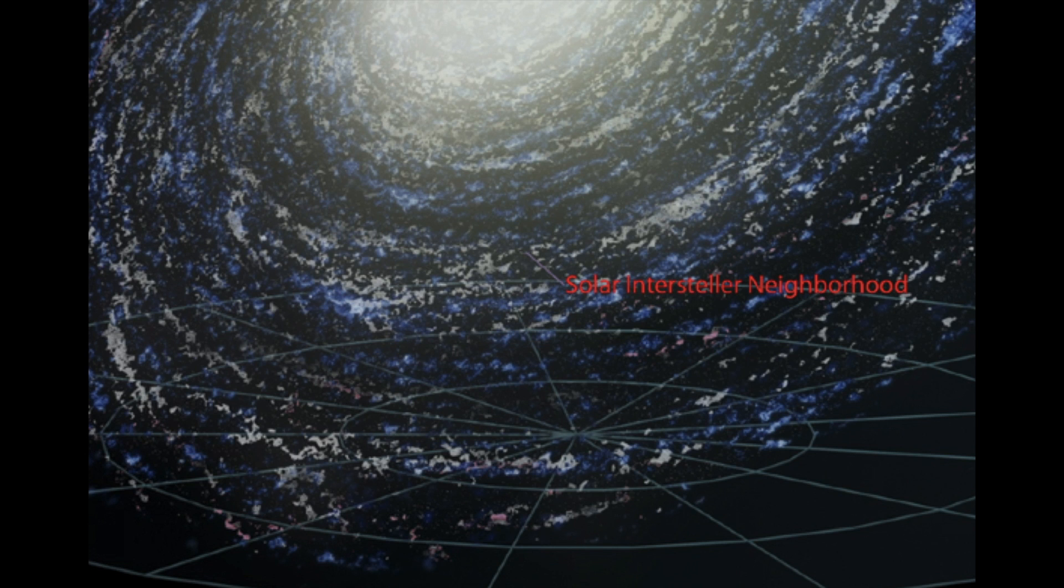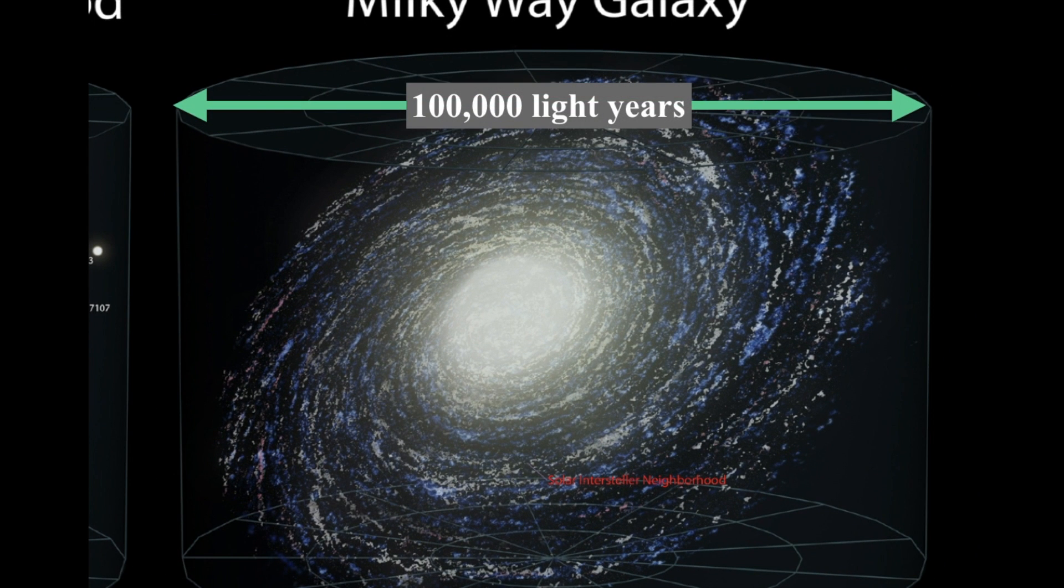Our local solar neighborhood is one of many such neighborhoods in the entire Milky Way galaxy. The Milky Way galaxy is about 100,000 light years across and composed of 200 billion plus stars. So when we zoom out from something 50 light years or 100 light years across to 100,000 or 1,000 times that size or 10,000 times that size, we see that our Milky Way is a vast collection of such stars where the spaces between the stars are incredible.